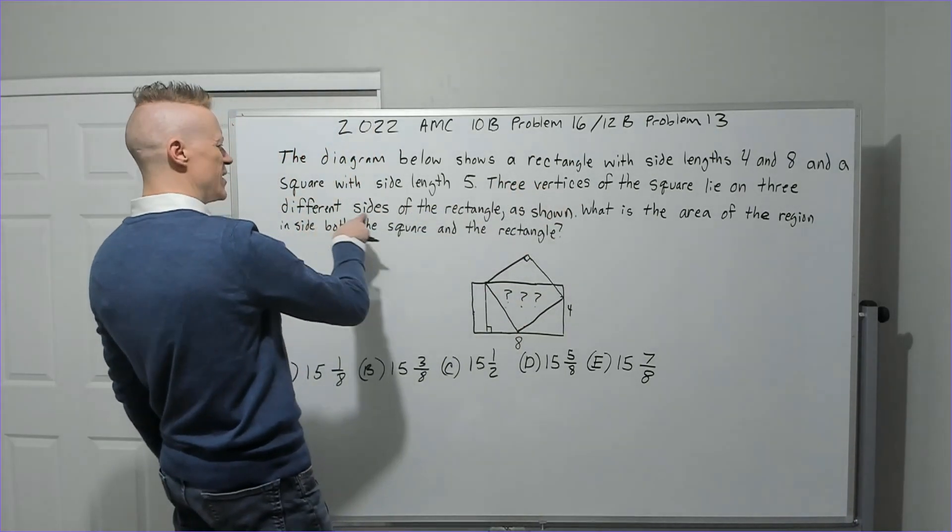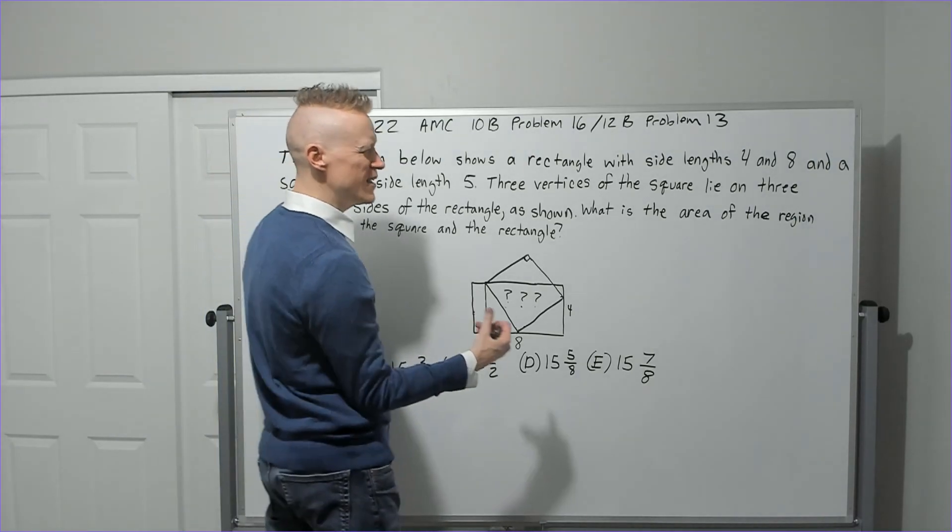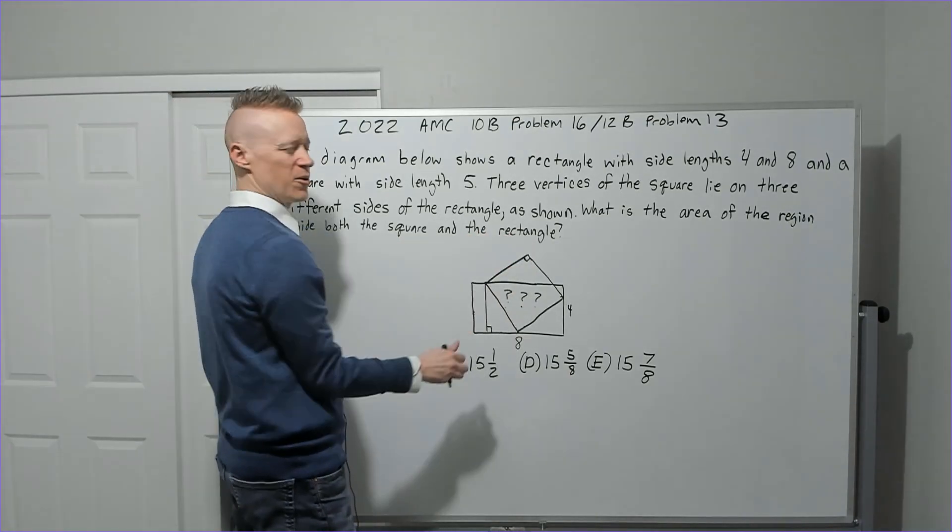What is the area of the region inside both the square and the rectangle?